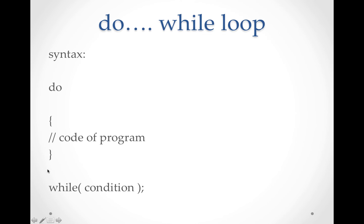One more property: in if-else, for loop, and while loop, after the round bracket, you do not have a semicolon. But in do-while, you have a semicolon after the condition at the end. Keep this in mind.